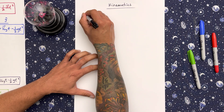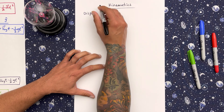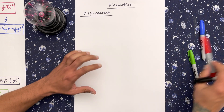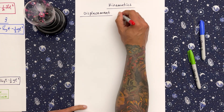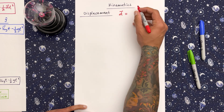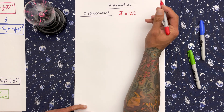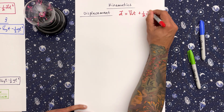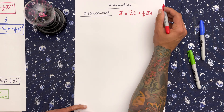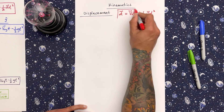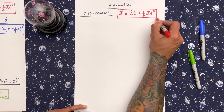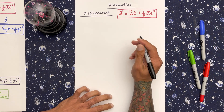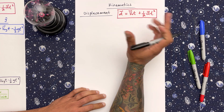For displacement, we're gonna put a general equation. The equation is: displacement (vector) equals velocity initial (vector) times time, plus one-half acceleration (vector) times time squared. I'm not gonna keep writing the vector notation, but just so you know, those are vectors.